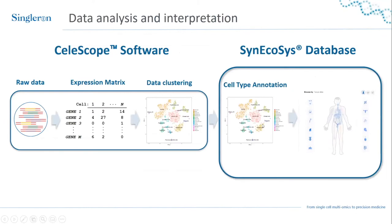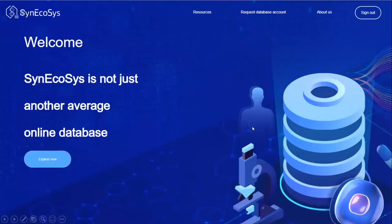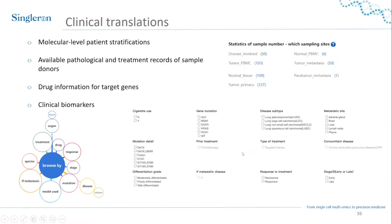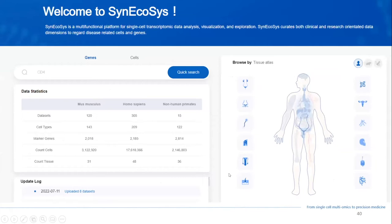I'd like to introduce the Synecosys database. This is not a secondary analysis tool but a database of published data. We collect available public data, manually curate it, add clinical information, and run it through the same pipeline — meaning you can compare all datasets present because they went through the same quality controls. Importantly for clinical translation, we add molecular-level patient stratification including treatment information, disease type, and patient mutations, allowing you to compare different conditions using these factors.